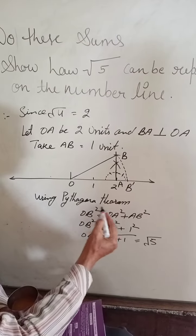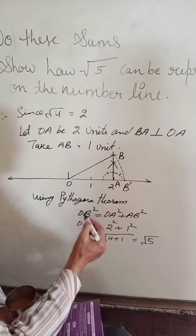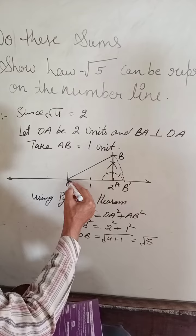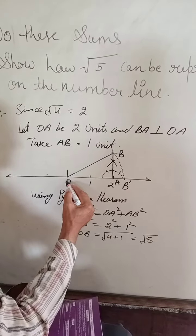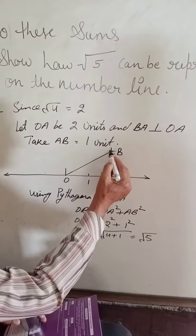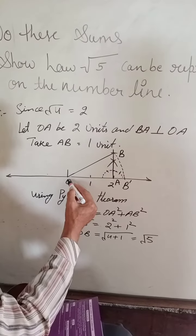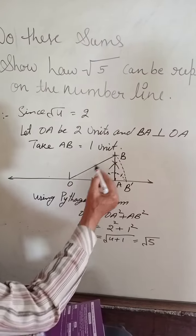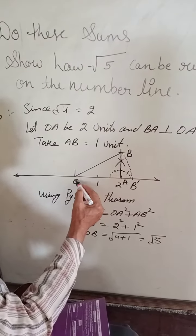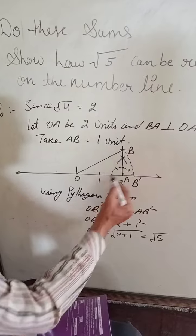Now, when you use Pythagoras theorem, see, this is the hypotenuse of triangle OAB. And we all know that in a right-angled triangle, the square of the hypotenuse is equal to the sum of the squares of the remaining two sides.